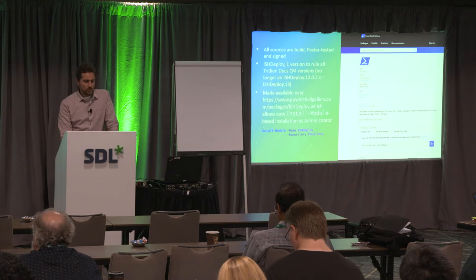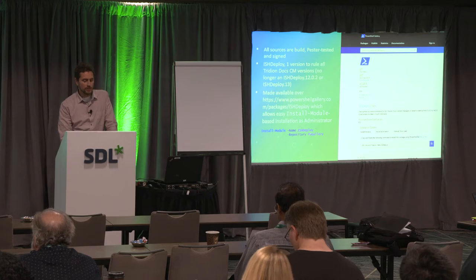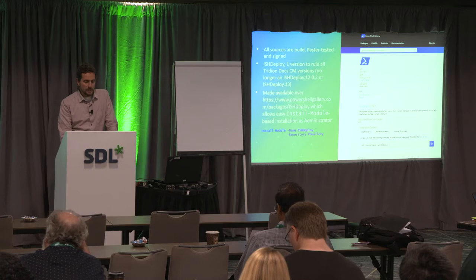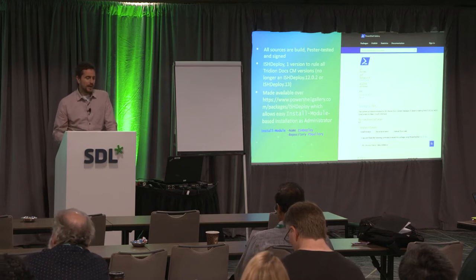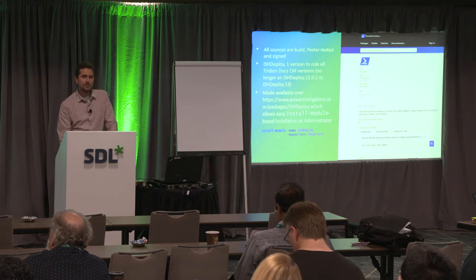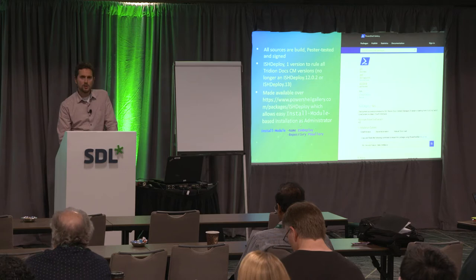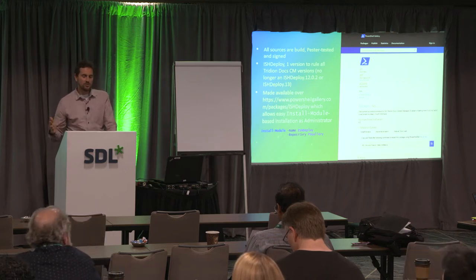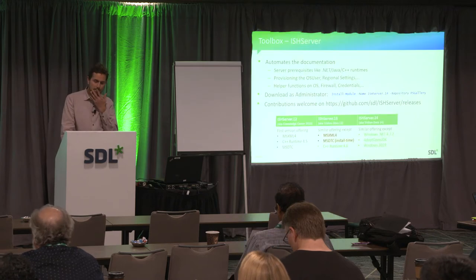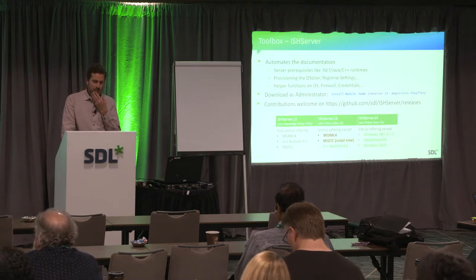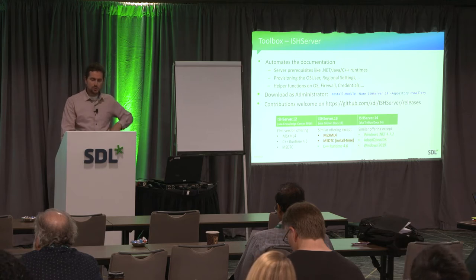The simplest way to install ISH Deploy is to run 'Install-Module ISHDeploy' from the PowerShell Gallery, which is owned by Microsoft. Previously there were version-specific editions of the library per content management version, but that's now simplified to one version to rule them all — no more separate 12, 13, or 14 editions.